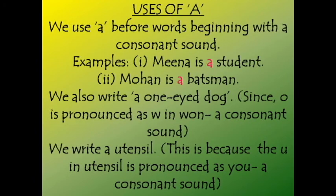Let us now have a look at the uses of a. We use a before words which begin with a consonant sound. All letters except A, E, I, O, U are termed as consonants. For example, 'Meena is a student' — here a is used before student, which begins with the consonant S. Another example: 'Mohan is a batsman' — here B is a consonant, so a is used.